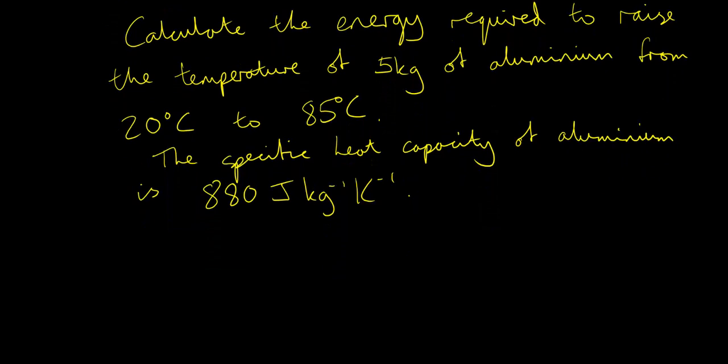So let's pull out some values here. We know that the mass here is 5 kilograms and that's already in SI units, but be careful sometimes a question might give you the mass in grams. We know that the delta T here is 85 minus 20, which gives us a change of temperature of 65 degrees Celsius.